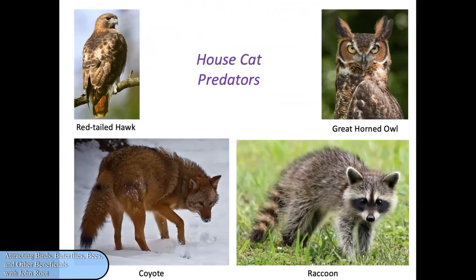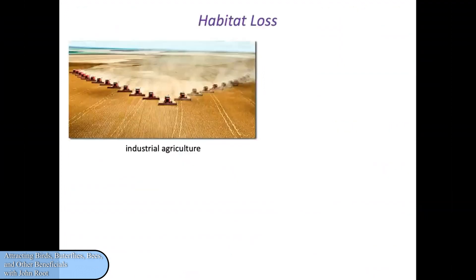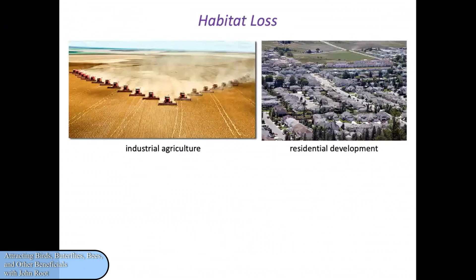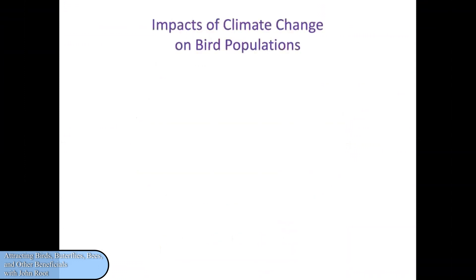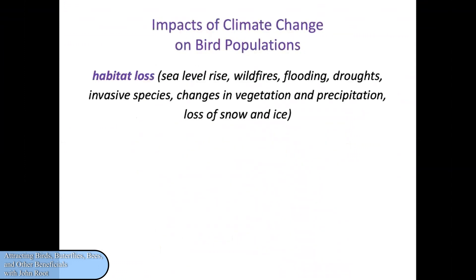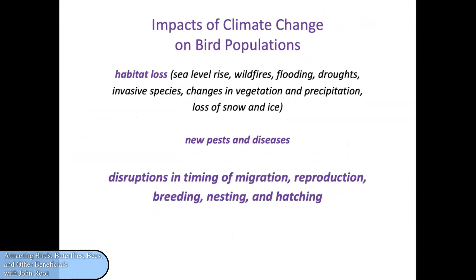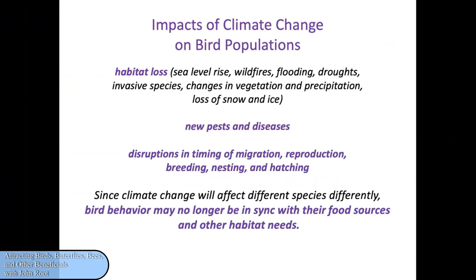In addition, other cats and dogs outside can pose a hazard to house cats. Habitat loss is due to industrial agriculture, residential development, and commercial development. There simply are not as many places as there used to be for animals to live and the plants they depend on, and that has had a huge impact on birds. So has climate change. The impacts include habitat loss itself, new pests and diseases, disruptions in timing of migration, reproduction, breeding, nesting, and hatching, and the possibility that bird behavior will no longer be in sync with their food sources and other habitat needs.